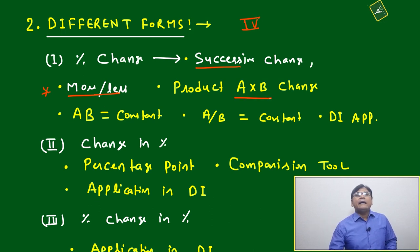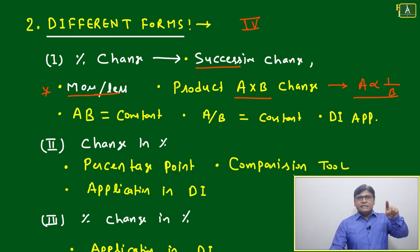Next is product A and B, means A×B change, or you can say here A is inversely proportional to B.